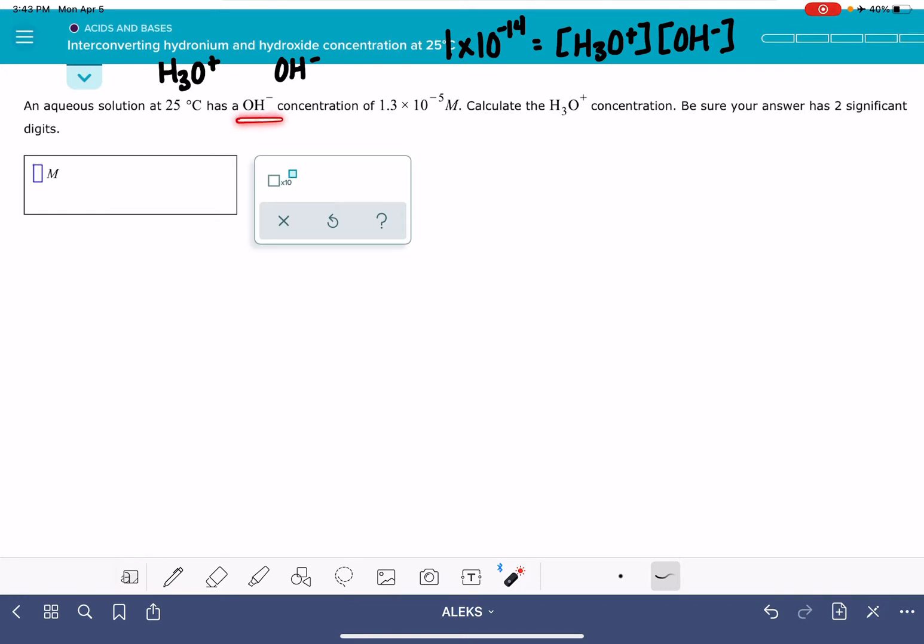For the first problem here, it's telling us that the OH minus concentration is 1.3 times 10 to the minus 5. That's this number right here, and it just wants us to calculate the H3O plus concentration. Super straightforward.